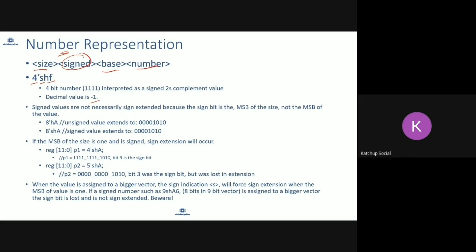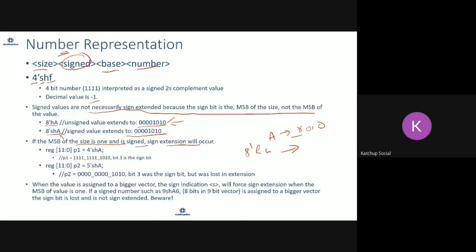Signed numbers are not necessarily sign-extended automatically. For example, if you have 8'sha it will extend but not necessarily be sign-extended, because providing an 8-bit declaration with only a 4-bit value does not automatically trigger sign extension. Sign values are not sign-extended by default. However, if the MSB of the size is 1 and the number is signed, then sign extension will occur.